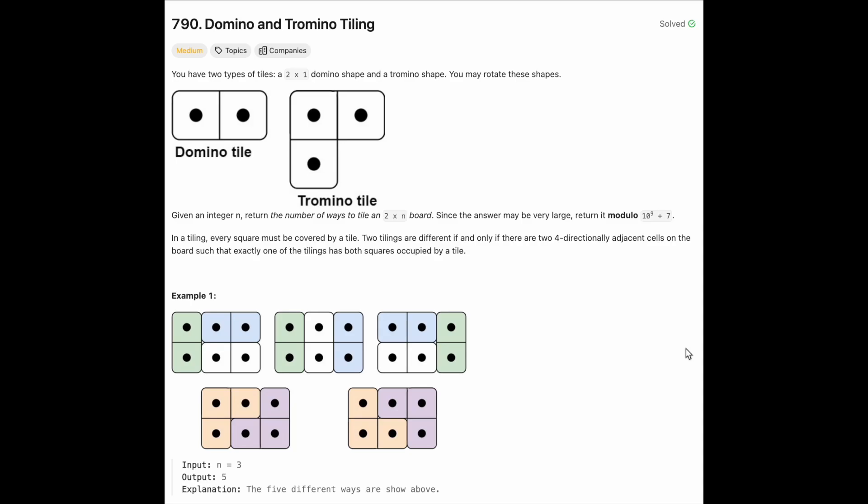Hi everyone, welcome back. Let's write some more LeetCode today. Today we are solving domino and tromino tiling. So the problem states that we will have two types of tiles, a domino shape and a tromino shape, in which they will look like this and we can rotate them however we want.